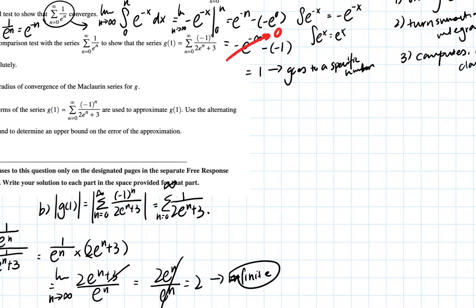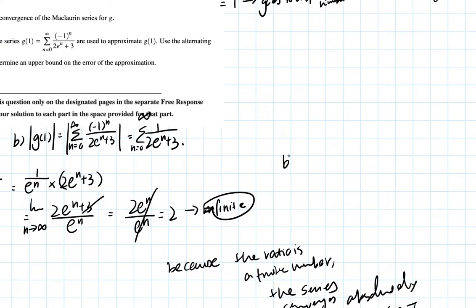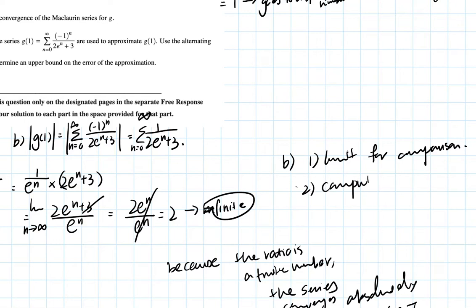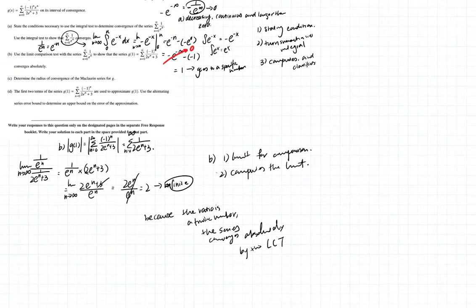My guess for College Board scoring on part B: one point for setting up the limit comparison ratio as the limit as n approaches infinity of the two terms, and one point for computing the limit and concluding convergence.